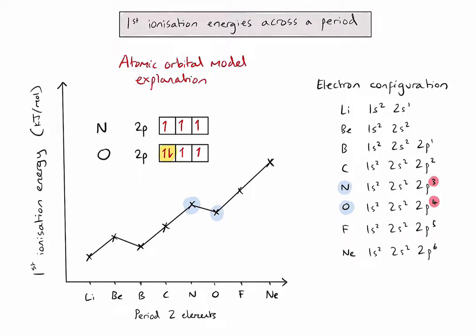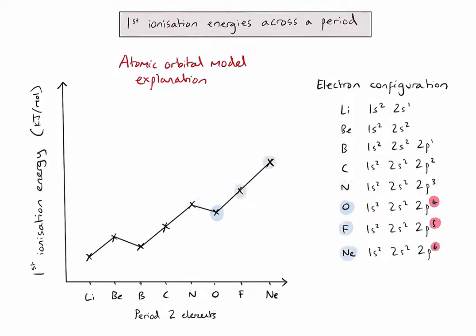So even though oxygen has one more proton than nitrogen, the electron-electron repulsion in the paired P orbital is the more important factor explaining the experimental data. Following oxygen, the general trend of increasing ionization energy continues, meaning the increasing number of protons in the nucleus has a greater effect on ionization energy than any repulsion between electrons in orbitals.